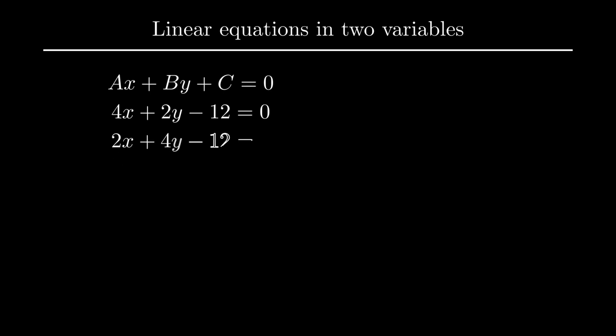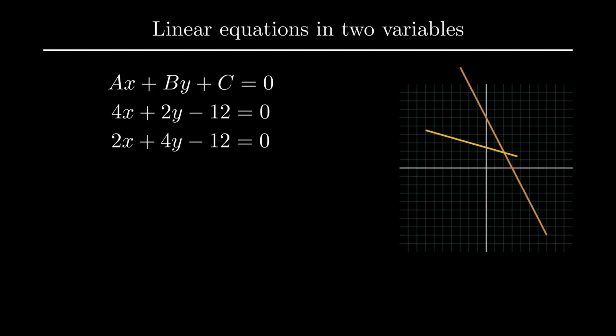Now consider another linear equation in two variables as 2x plus 4y minus 12 equal to zero. Now obtain its solution graphically in the same manner we did for equation number one. We get a line intersecting the line 4x plus 2y minus 12 equal to zero at coordinate 2 comma 2. The coordinate 2 comma 2 is the only unique solution for the pair of equations 4x plus 2y minus 12 equal to 0 and 2x plus 4y minus 12 equal to 0.